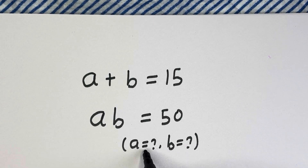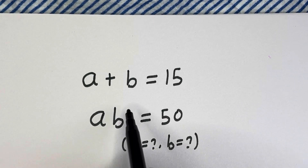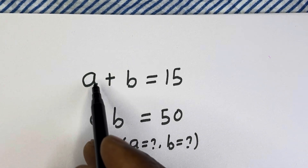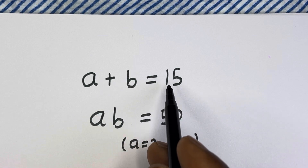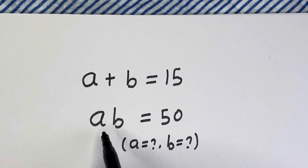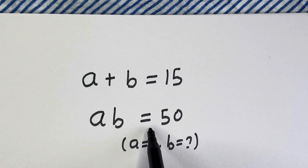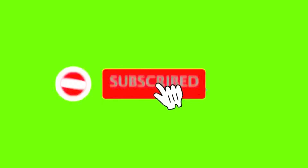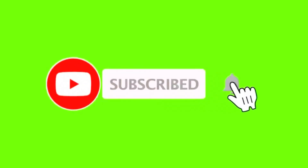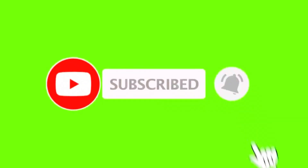Hello! How to solve for A and B in this equation: A plus B is equal to 15, A times B is equal to 50. But before we proceed, please don't forget to like, share, comment, and subscribe to my channel.